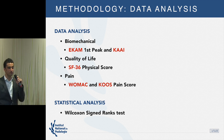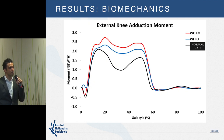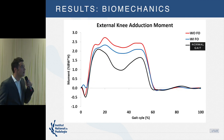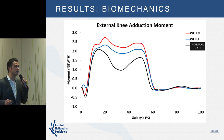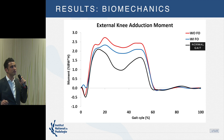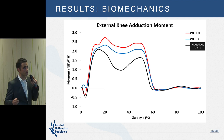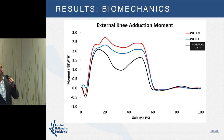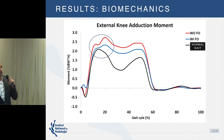On this graph, you can see three curves: the red curve represents osteoarthritis patients without foot orthoses, showing the first peak of the EKAM; the blue curve represents osteoarthritis patients with foot orthoses; and the black curve represents the normal gait of healthy people. We observe a real and significant reduction of the first peak of the EKAM.